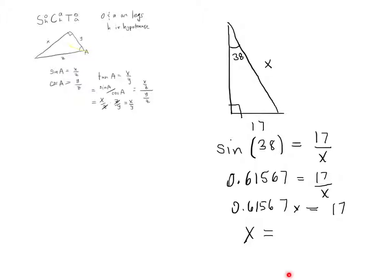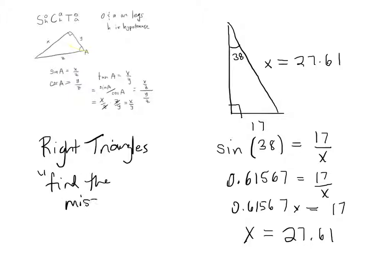27.6, let's call it. 27.61. Okay. So that tells us what X is. X is 27.61. Okay. So, that's kind of the prototypical problem where you're doing, this could be called right triangles, find the missing info.